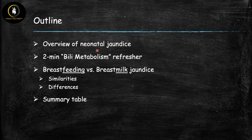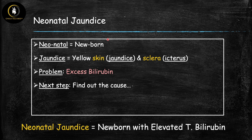Here's a quick outline of our talk. We're going to start with an overview of neonatal jaundice because these two conditions fall in that category. We have a bilirubin metabolism refresher because remembering the steps actually helps you understand the pathophysiology of these two conditions better, and then we're going to spend the rest of the time talking about breastfeeding versus breast milk jaundice — their similarities, their key differences — and I'll share the summary table with you at the end.